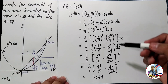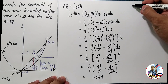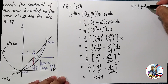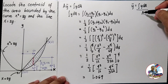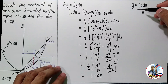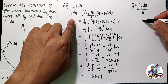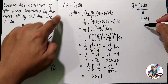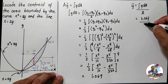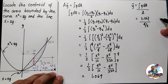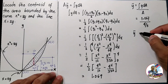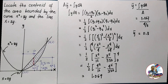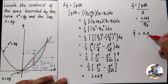From the formula, ȳ = ∫y dA / A = 1.067 / (4/3). Therefore ȳ = 0.8. So the final answer is x̄ = 2 and ȳ = 0.8.